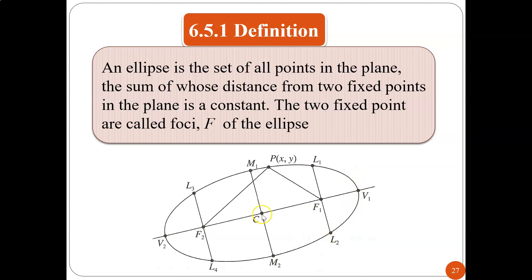An ellipse is quite similar to a circle — you have a center. But this one has additional labels like foci and also vertices. This is your center, and remember we learned parabola before. Half of the ellipse is actually a parabola.